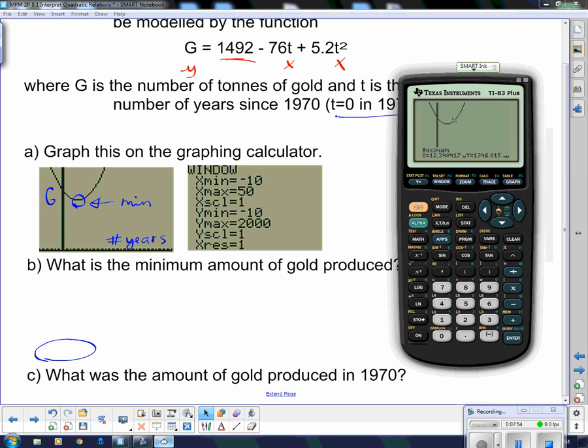And then go back to this thing, and let's do the minimum value. We're going to go 2nd trace. And we're going to choose minimum, which is number 3. I must have pressed 4 last time. Left bound, same thing. I'm going to go over until I'm to the left of that bottom. And right bound, I'm going to go to the right of that bottom. And then I'm going to go back to the middle. There we go. That's looking better. And now we're going to pull that down.